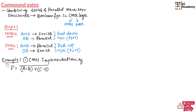Now let us take an example to understand compound gates. Here we need to implement a Boolean function using CMOS logic. In this function there is an AND operation between A and B, an AND operation between C and D, and between these two results there is an OR operation. For the overall result there is a NOT function, which can be implemented using PMOS.